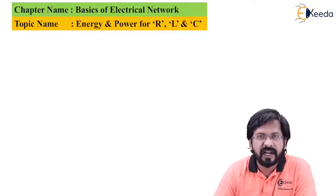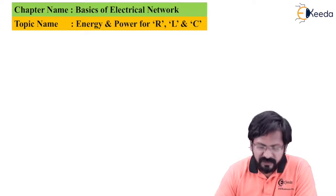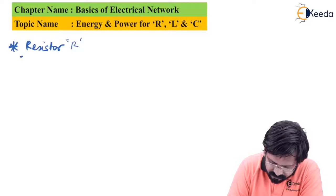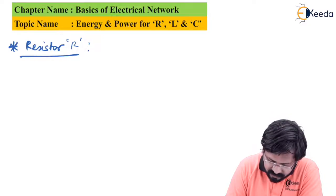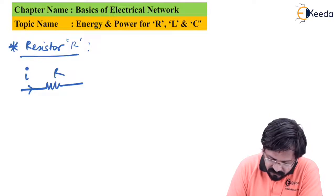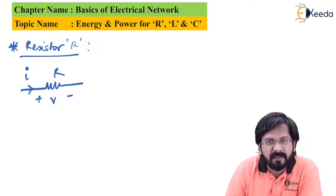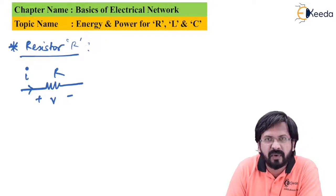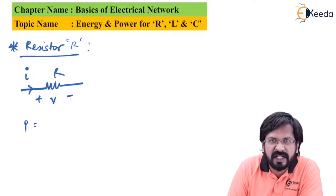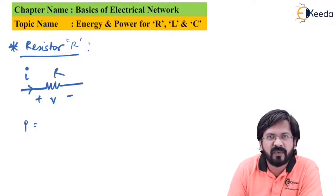Let us understand how to get energy and power for R, L and C. Let us start with R first. Assume a resistor R in ohms through which current I is flowing, because of which there is a voltage drop across R, which is V. By Ohm's law, V equals IR, or I equals V by R. The power dissipated in a resistor can be given by two formulas: I squared R, or V squared by R.